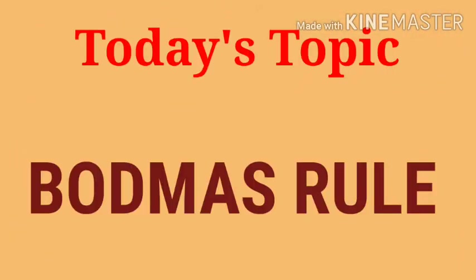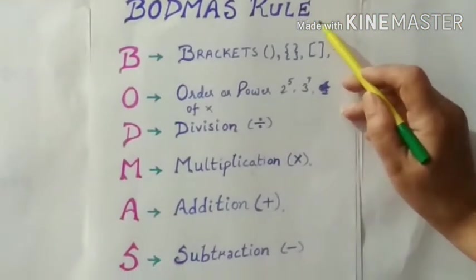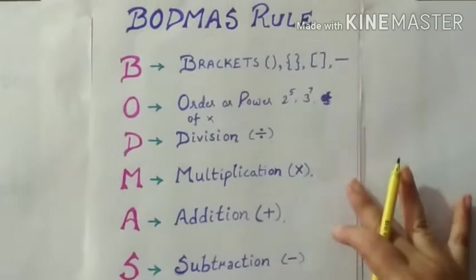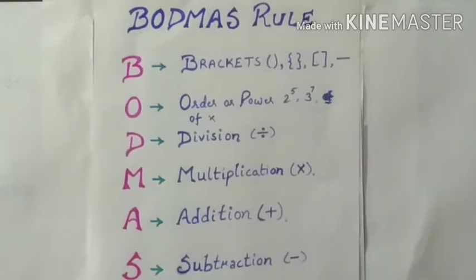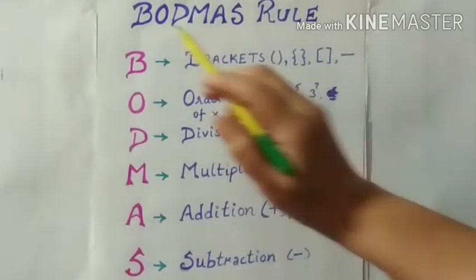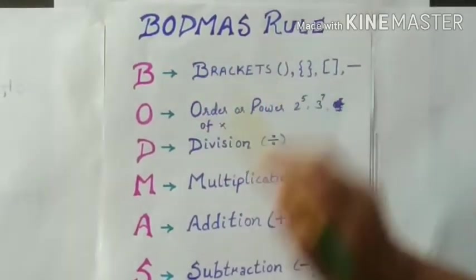Now what is today's topic? Today I will explain you BODMAS rule. So let's start. What is BODMAS rule? BODMAS rule is used for the simplification of numerical expression. That numerical expression which have more than two operations. Now see the description of BODMAS. B-O-D-M-A-S. This is called BODMAS.